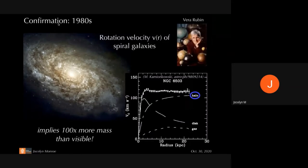It wasn't until an astronomer named Vera Rubin came along in the 1970s and invented a much more precise way to measure the velocities of stars inside spiral galaxies that we had confirmation of this dark matter picture. What Rubin did was pick out a star at a certain distance from the center — the radius — and measure how fast it orbits around the center, the rotation velocity. The plot on the bottom right shows rotation velocity as a function of distance from the center for an example galaxy.